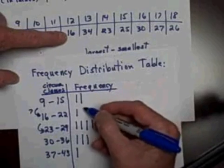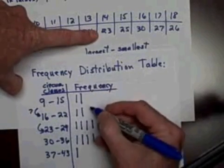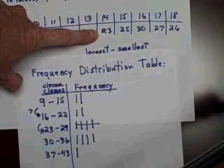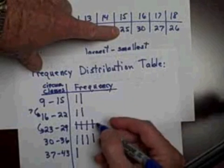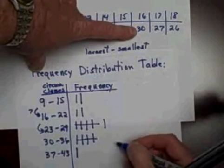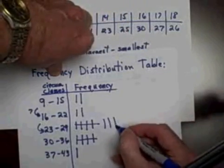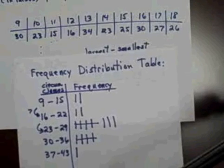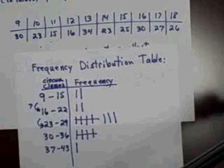16, my second class. 34 is down here. 23 is here. So I'll make that a group of 5. 15th tree is 25. That's another one here. 30. That's in this class. I have a 27. That's here. And a 26 is also here. So this is a picture of how the circumference of my 18 trees is distributed, making an arbitrary 5 classes of size 7 from 9 to 43 inches. This is what it looks like.